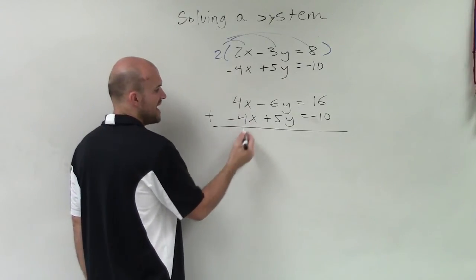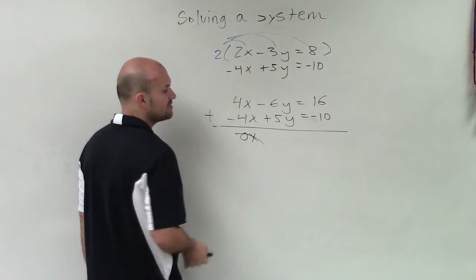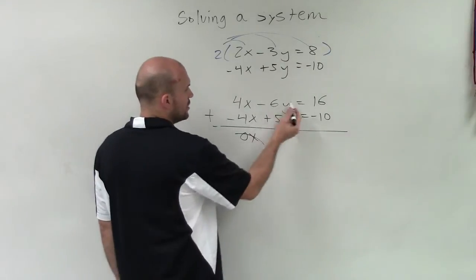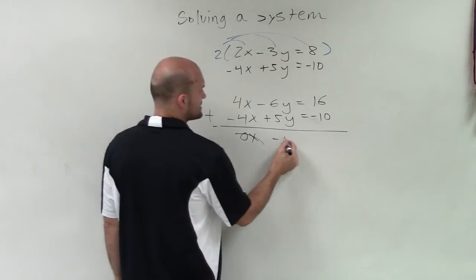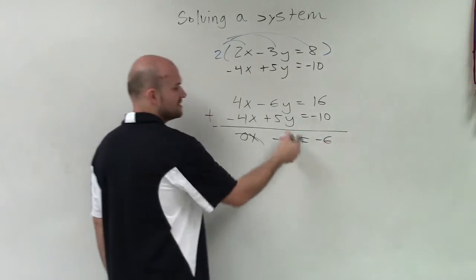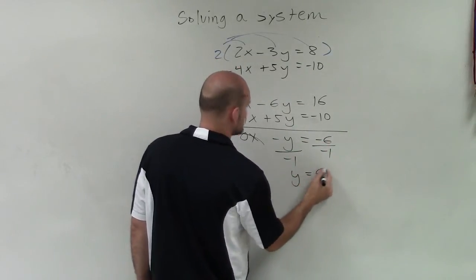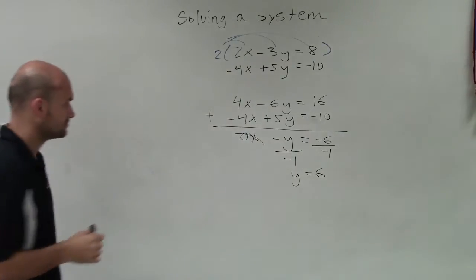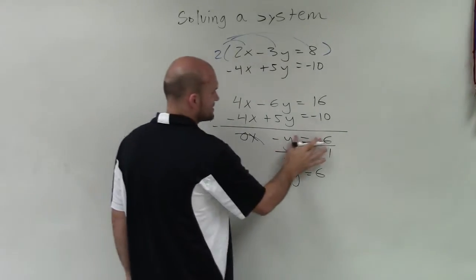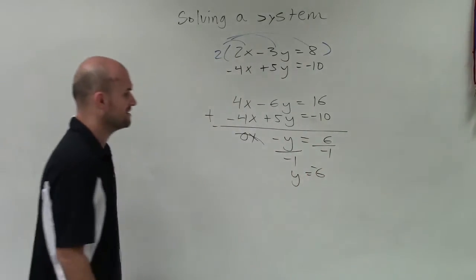So if I have a positive and negative, by adding them, I get 0x, which now eliminates my variable x. Negative 6y plus 5y is negative y equals negative 6. Now to solve for y, I divide by negative 1, and I get y equals positive 6. Sorry, that would be negative 6.